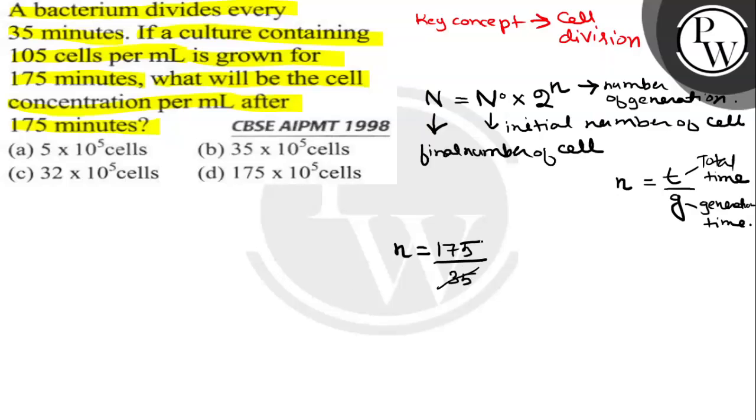So if we cancel this, n is coming out to be 5, that means 5 generations. Now keeping this small n in mind, we have to put it in the formula.